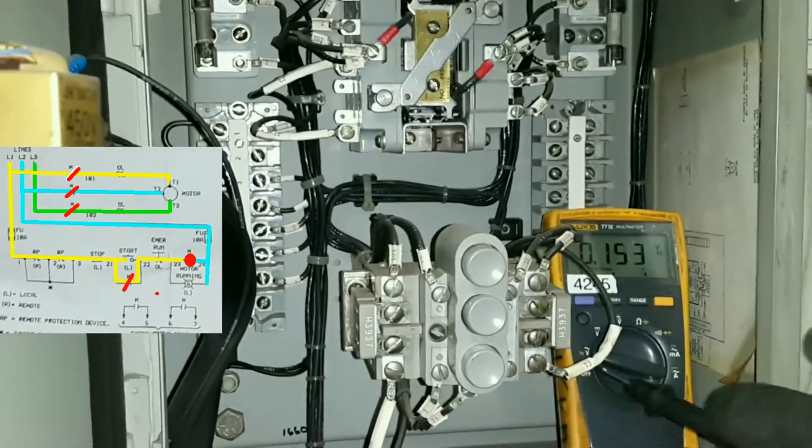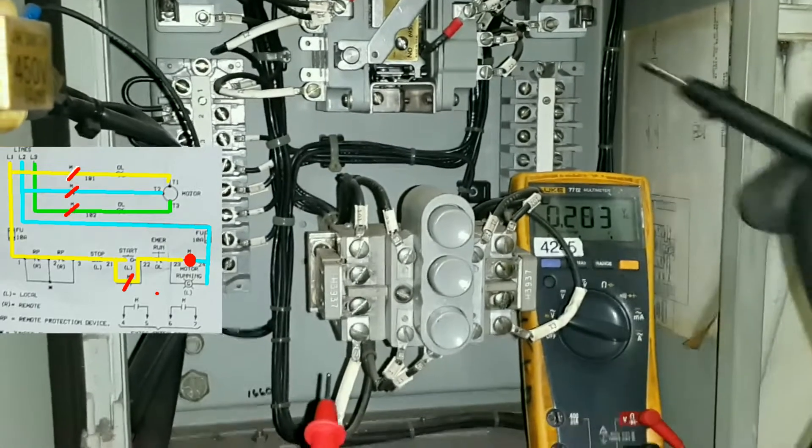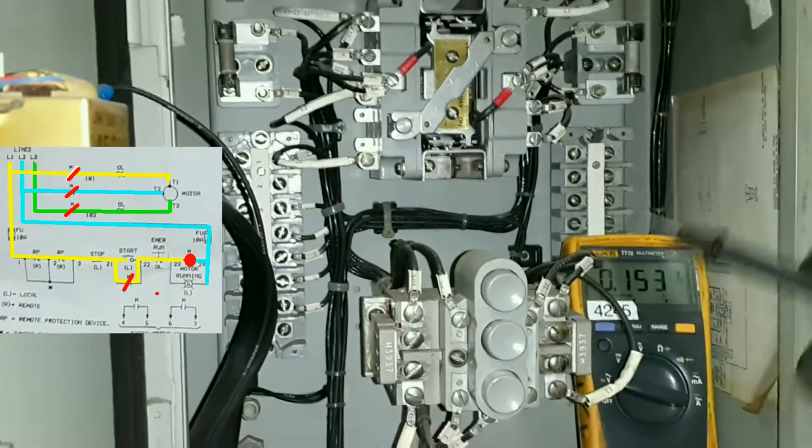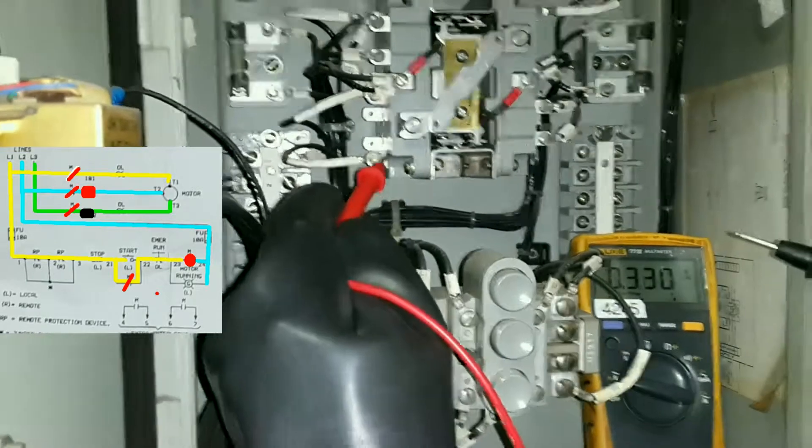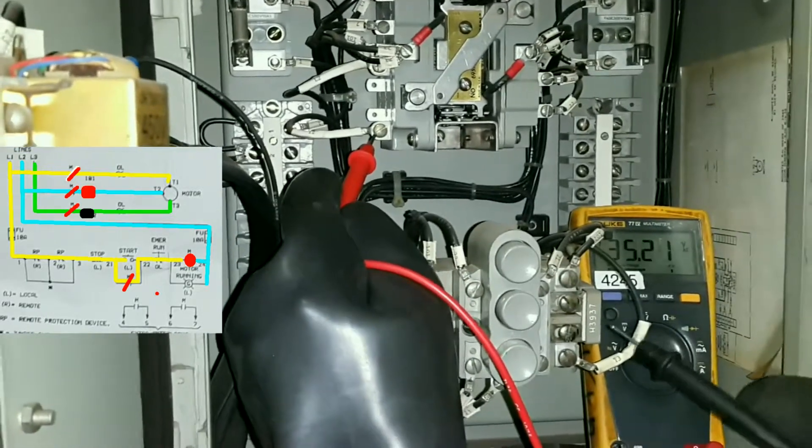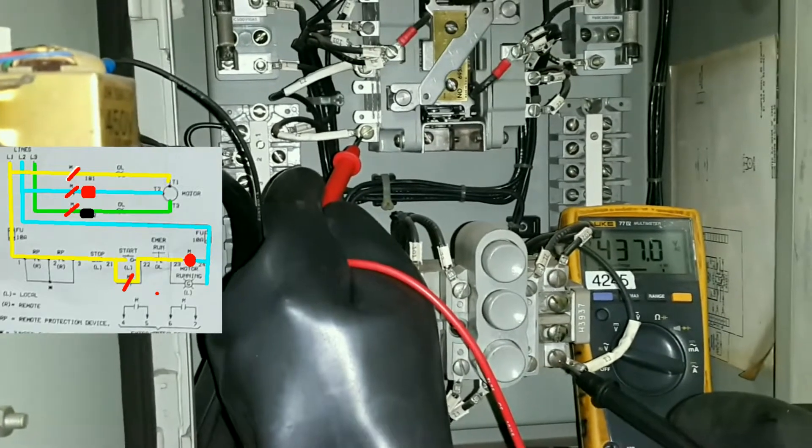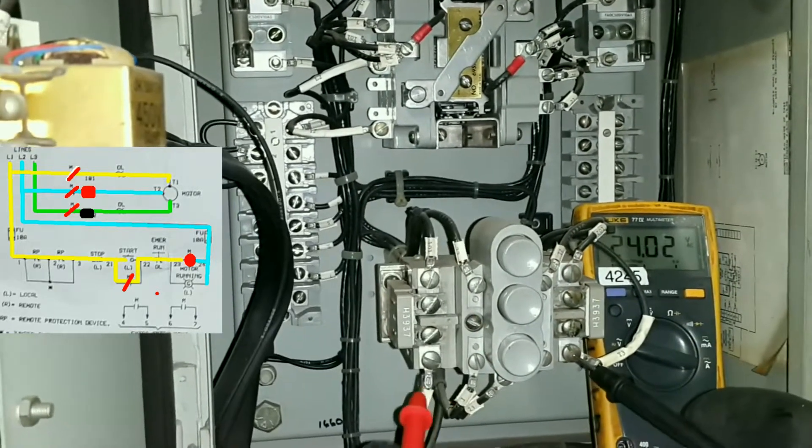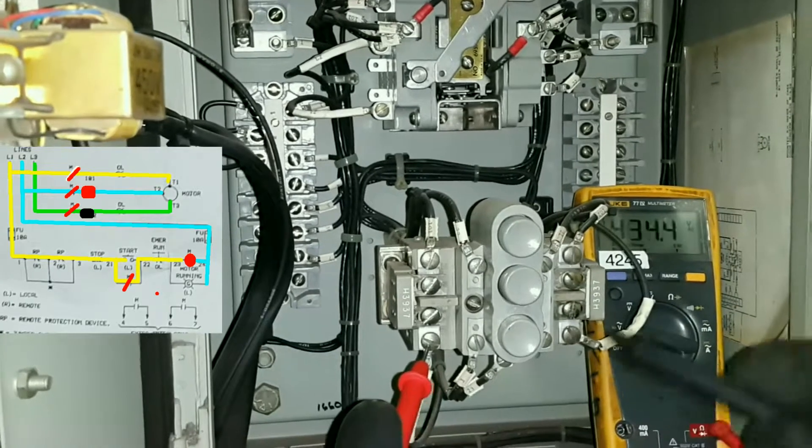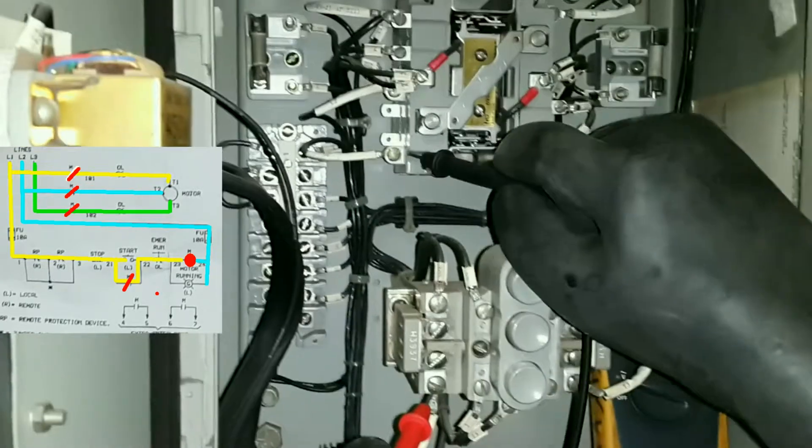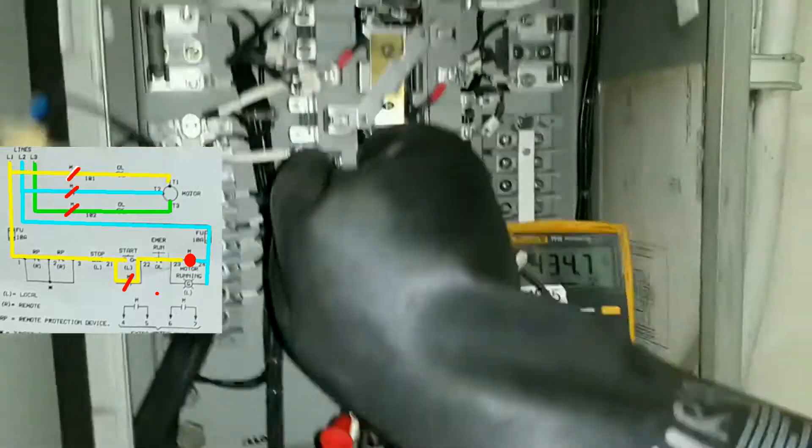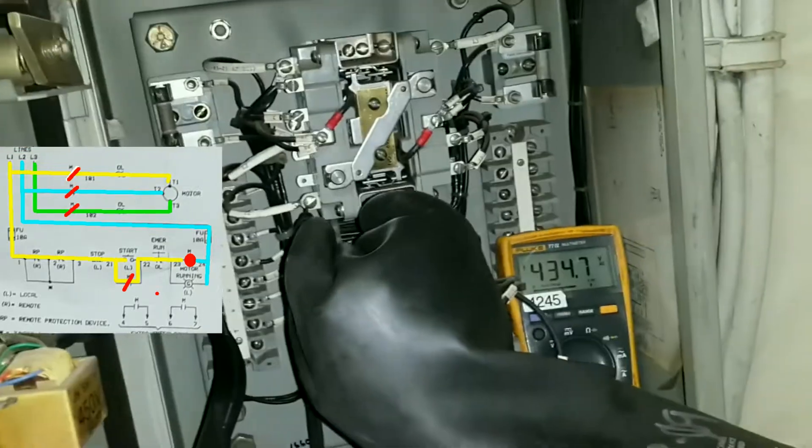Now T1 is here, T3 is over here. So T2, according to the schematics, doesn't go through the overloads. So T2 I have to do it at the contactor. That much power is going to the motor. And T2 to T1, I got 410.